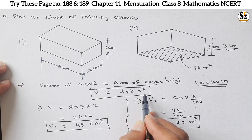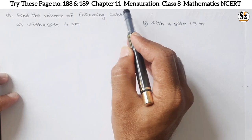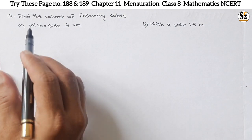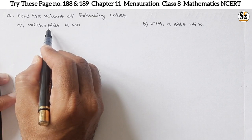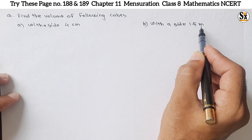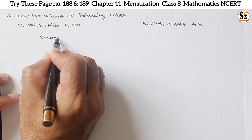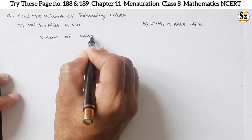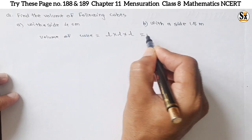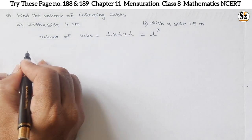Now see the question under 'Try This' section, page number 189, chapter Mensuration, class 8 Mathematics. The question is: find the volume of the following cubes. First cube has side 4 centimeters, second has side 1.5 meters. The formula for volume of cube is V = l × l × l = l³, where l is the side of the cube.